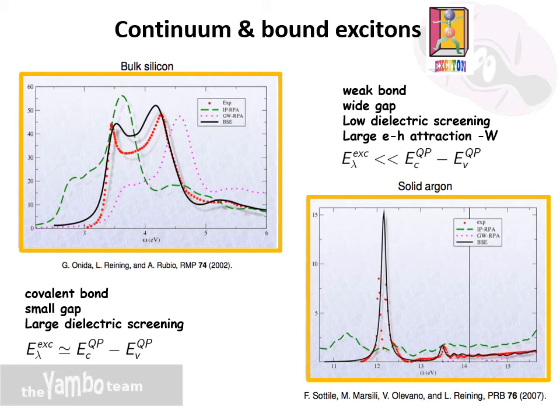On the right I present the spectrum of solid argon, which is a wide band gap material with weak bonds and low dielectric screening. In this case there is a large electron-hole attraction through the -W term of the kernel, so one can expect excitonic eigenvalues that are much red-shifted with respect to independent quasiparticle transitions. The Bethe-Salpeter solution is therefore able to recover the bound excitons below the gap that are not obtainable at any independent particle level.